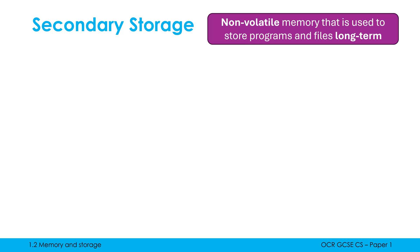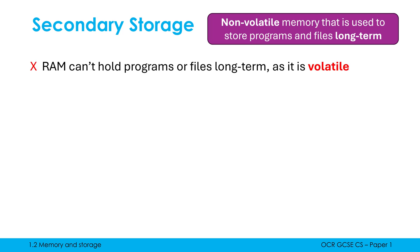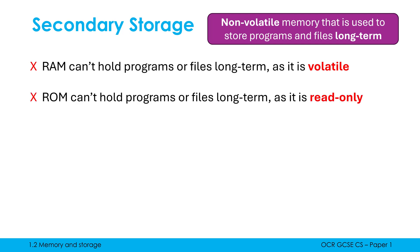We also have primary storage. Primary storage is RAM and ROM, which begs the question: why can't we use RAM and ROM for this long-term purpose? We can't use RAM to hold stuff long term because it's volatile — when power is turned off it loses all of the data, making it pretty useless for long-term storage. ROM isn't volatile, but it is read only. We can't easily write data to ROM, so it's again a non-starter. That's why we need secondary storage.